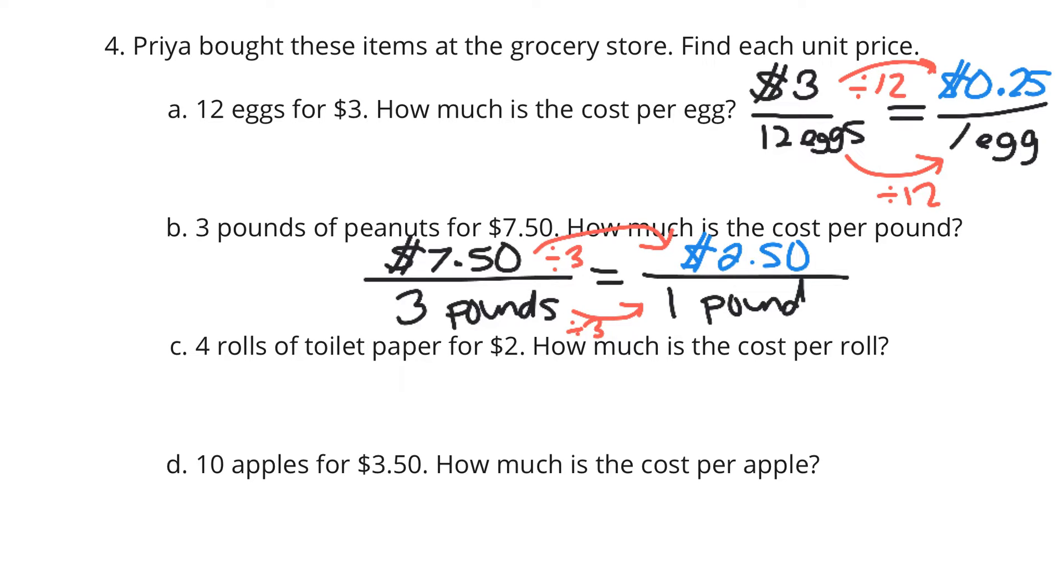4 rolls of toilet paper cost $2. How much is the cost per roll? Well, $2 for the 4 rolls. How much is the cost per 1 roll? Again, this is 4 divided by 4 to get to the 1 roll. And so it's going to be 2 divided by 4 to get the $0.50 per roll.